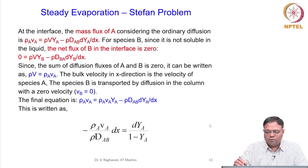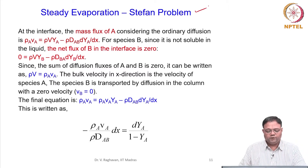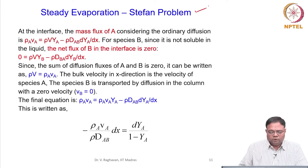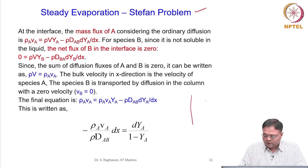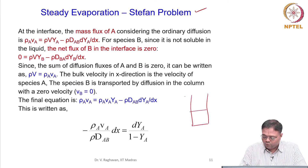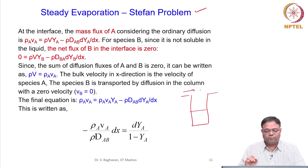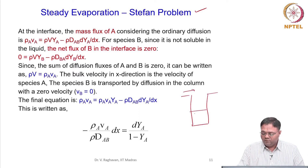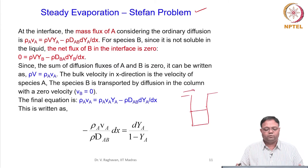Let us continue with the steady state evaporation problem, which is the Stefan problem. We considered a beaker in which a liquid is present and over which a gas is flowing. This is called the Stefan problem. When this liquid level is maintained constant, it will be a steady state problem.